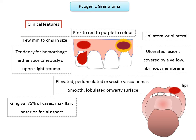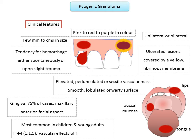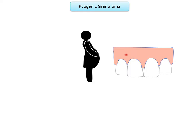The lips, tongue, and buccal mucosa are the next most common sites. Although pyogenic granuloma can develop at any age, it is most common in children and young adults. Most studies demonstrate a definite female predilection, possibly because of the vascular effects of female hormones estrogen and progesterone, which also explains its high prevalence during pregnancy.